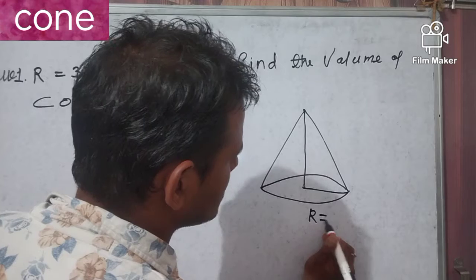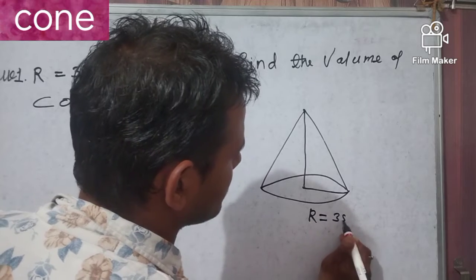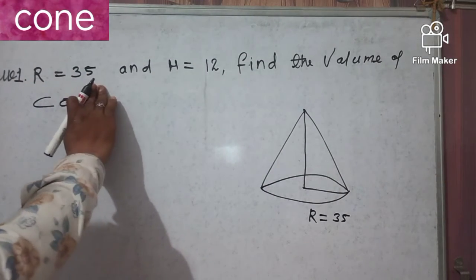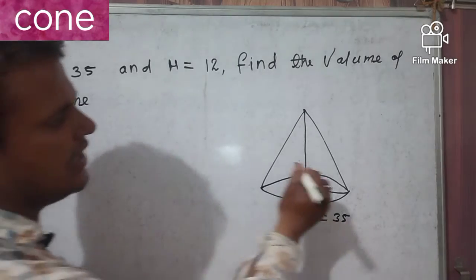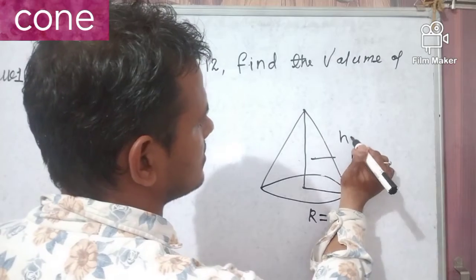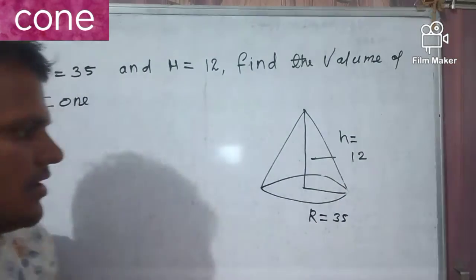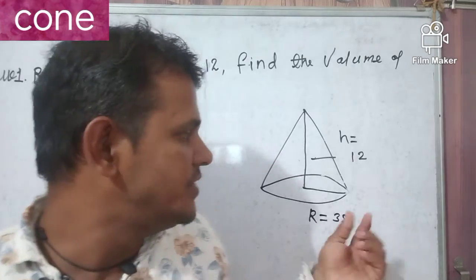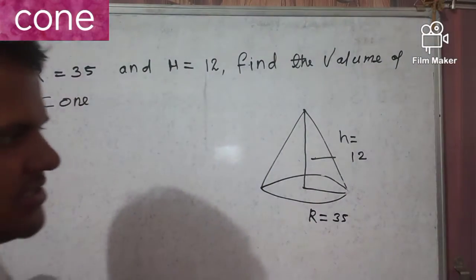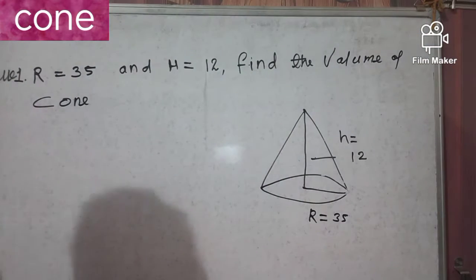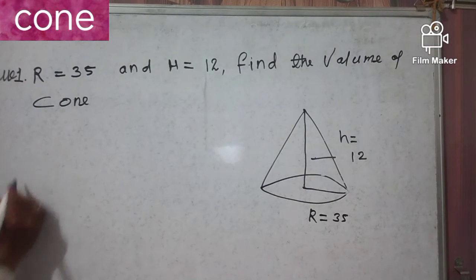Radius is given 35 and height is given 12. Height is given 12 and radius is given 35. So what is the volume of this cone? Now, what is the formula for the volume of a cone?